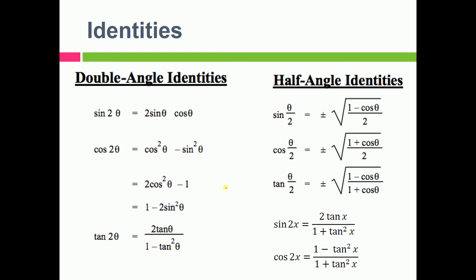Half angle identities, which is sine half, that is sine(θ/2) will give you this, cos(θ/2), tan(θ/2). Sine 2x, if you want to convert this in tan you need to use this relation. If you want to convert cos into tan you need to use this relation, like this.